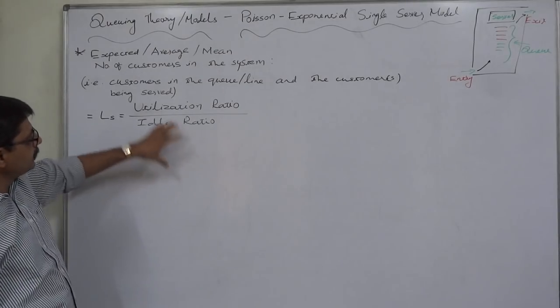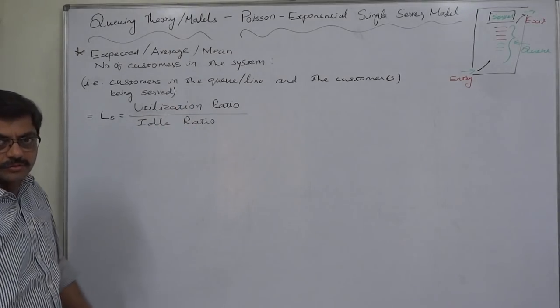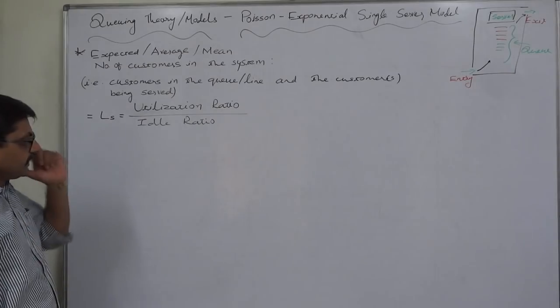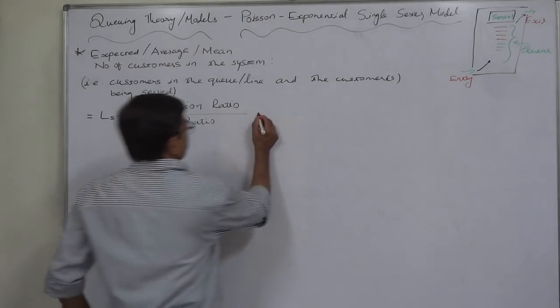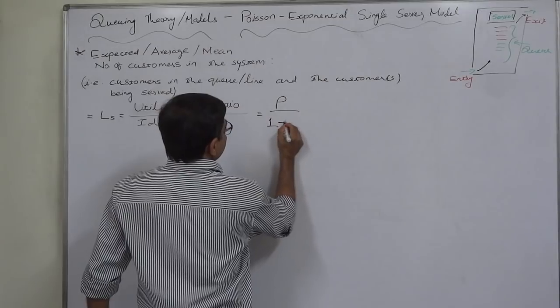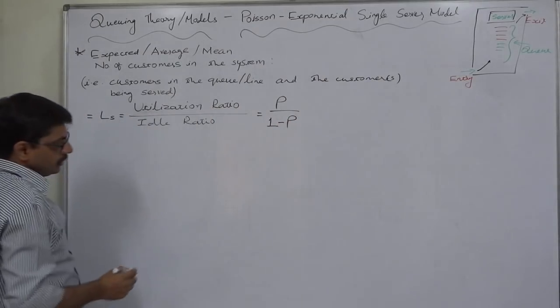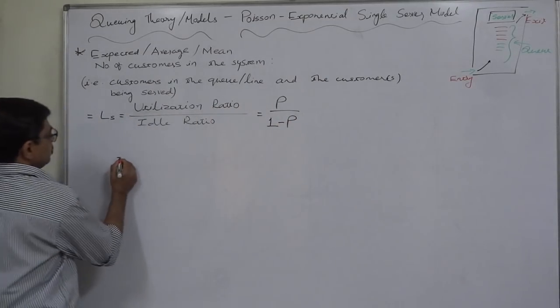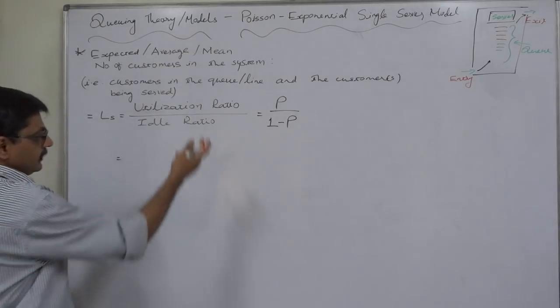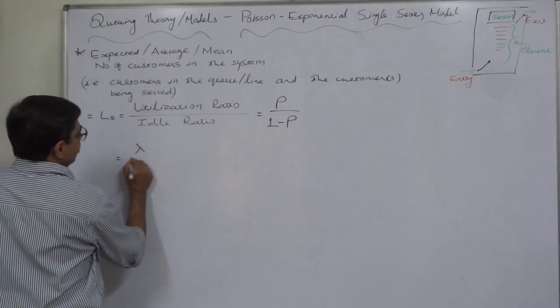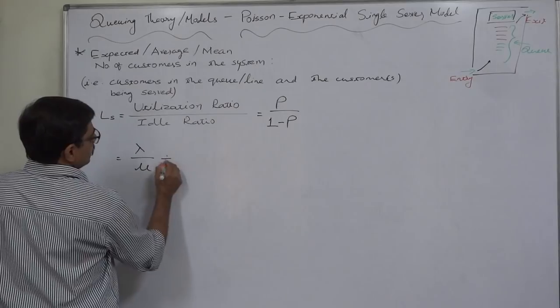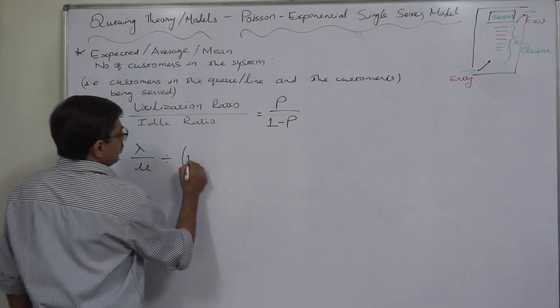So LS - the logic is it is the ratio of utilization ratio to idle ratio. Now we are aware that utilization ratio, that is rho, and idle ratio 1 minus rho. We are again well aware that it is lambda upon mu divided by 1 minus lambda upon mu.